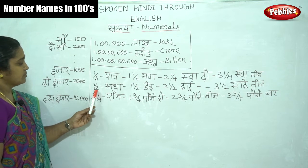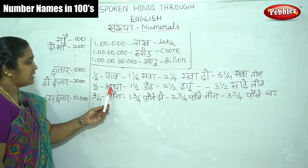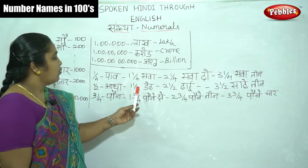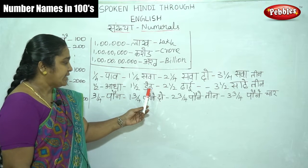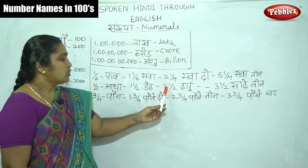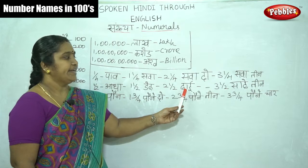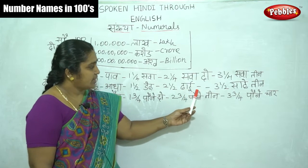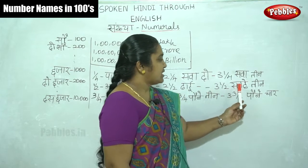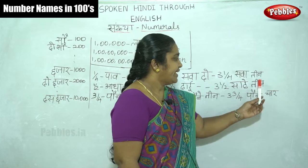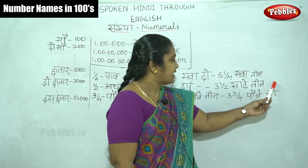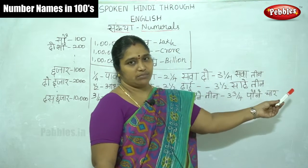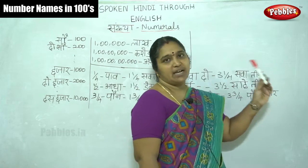One by two is Aadha. One and one-half is Dedh. Two and one-half is Aadha Dhai. Three and one-half is Sade Teen. We can extend this easily — Sava four, Sava Chaar.